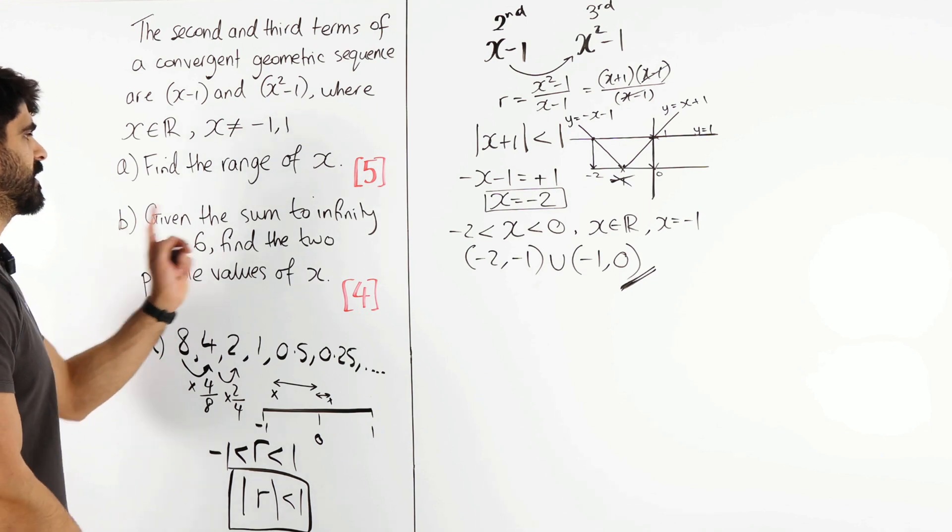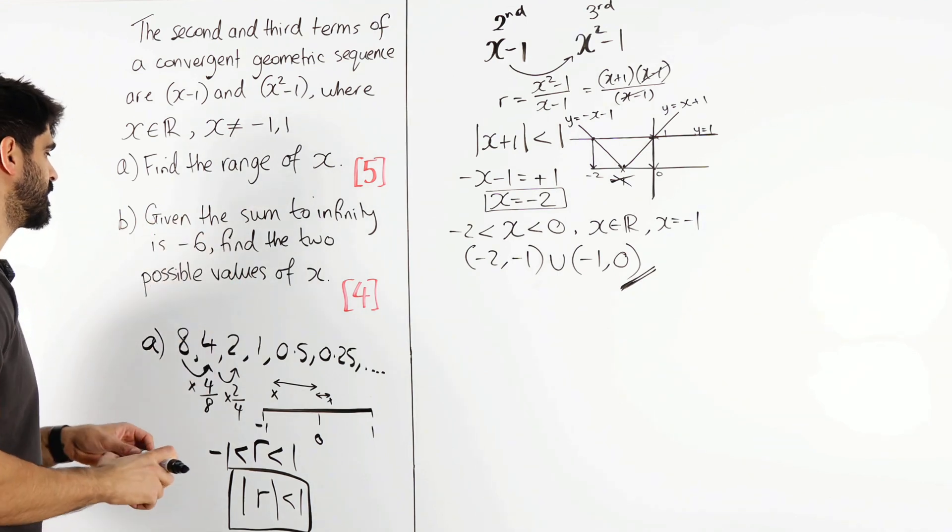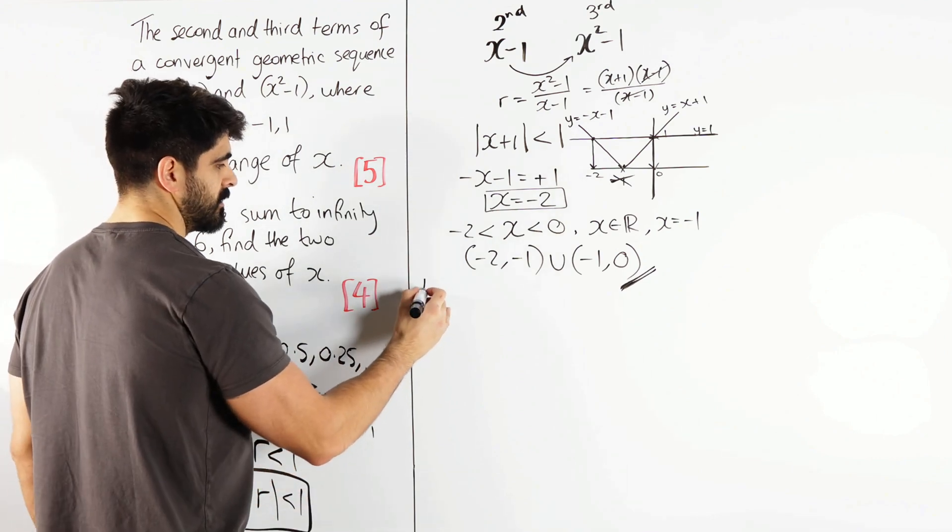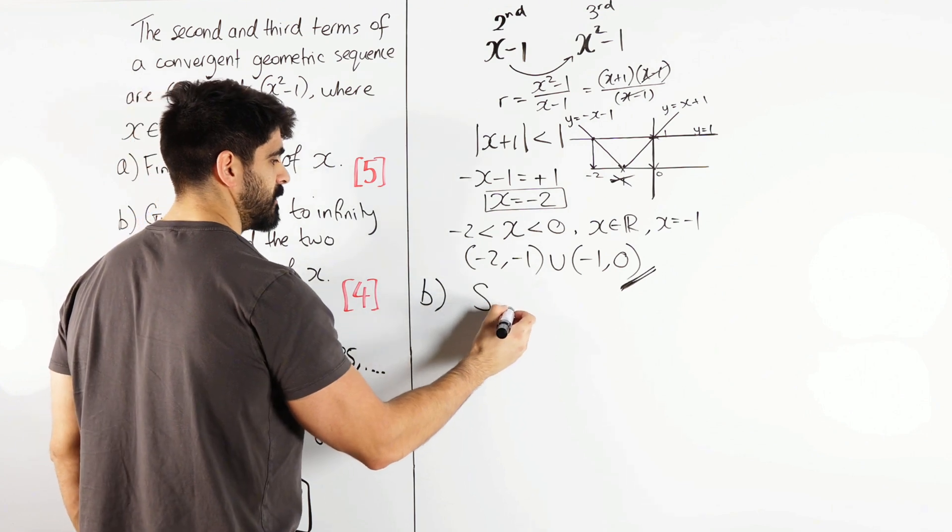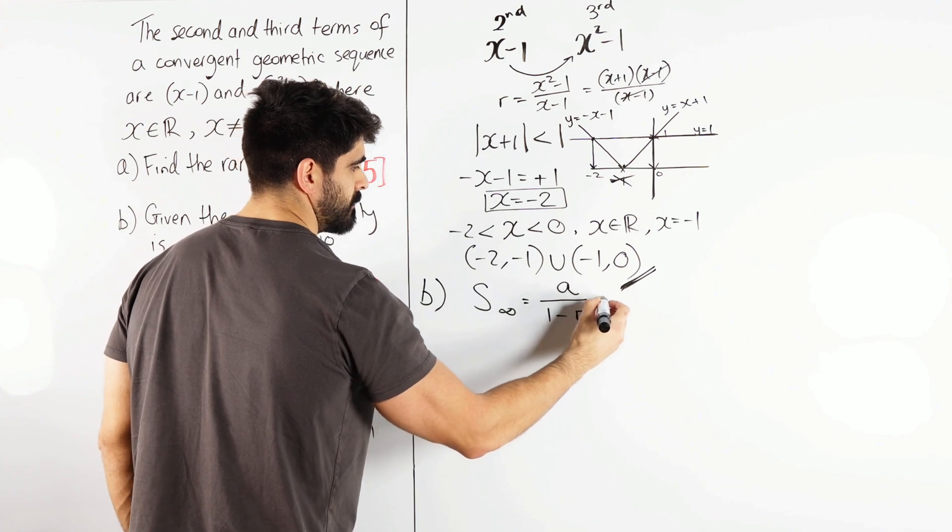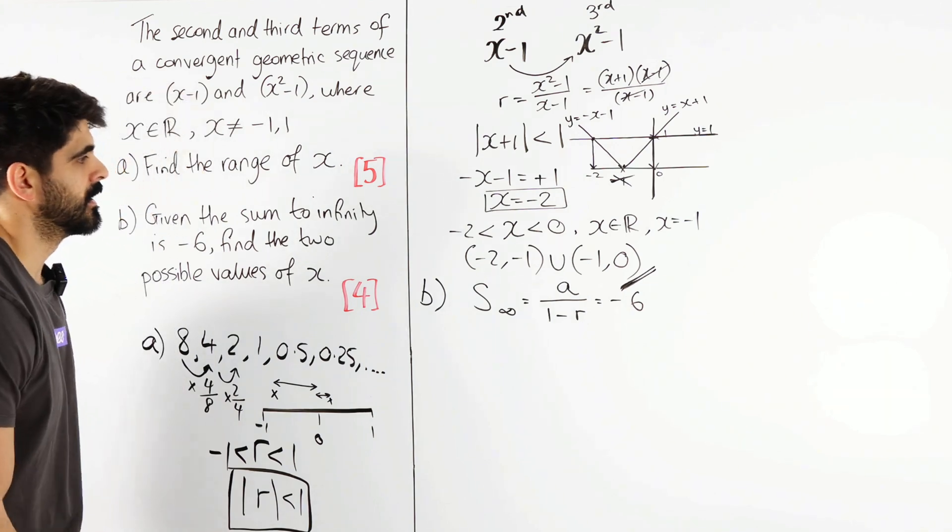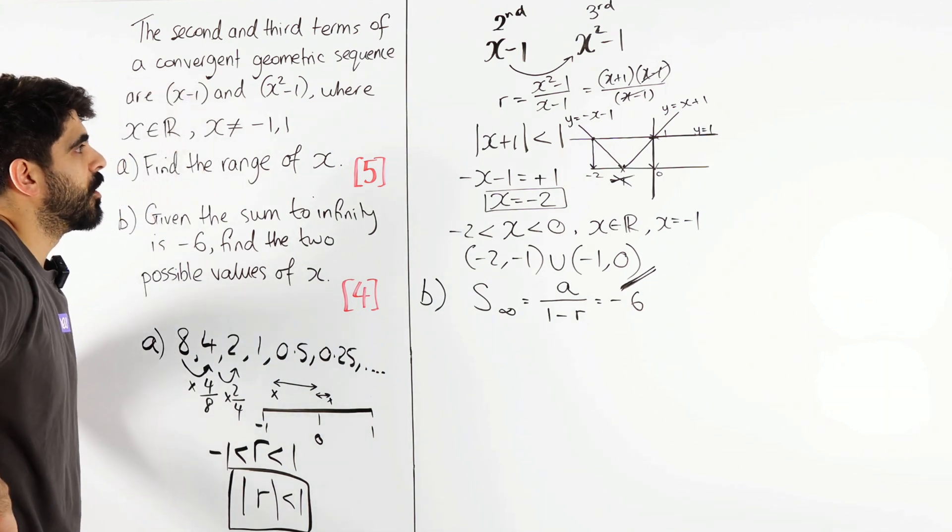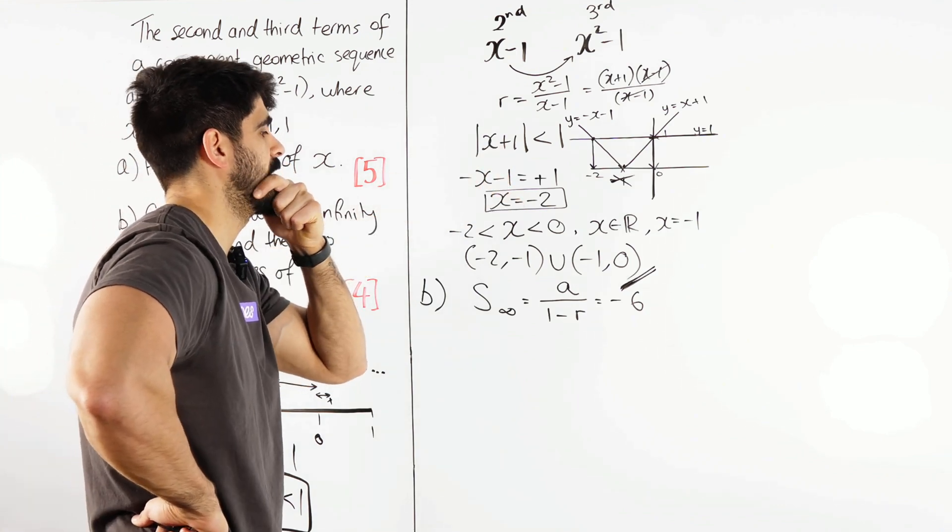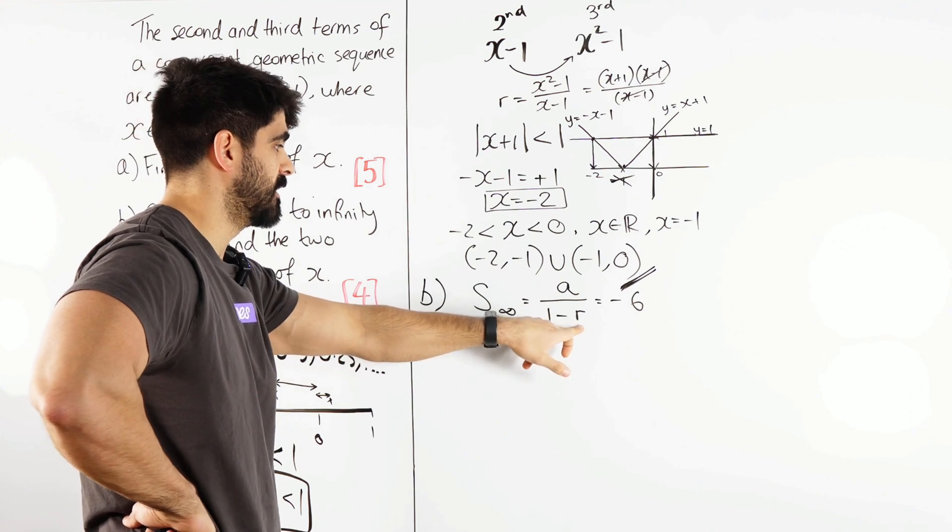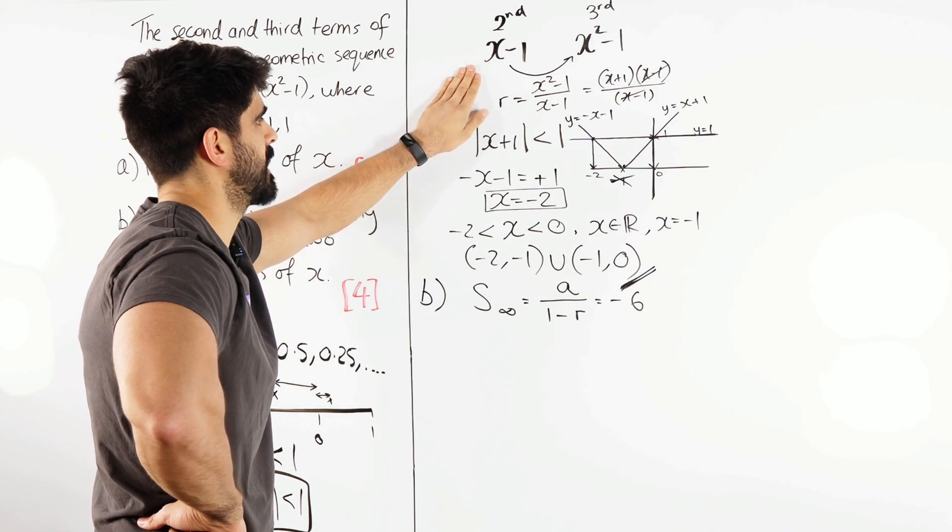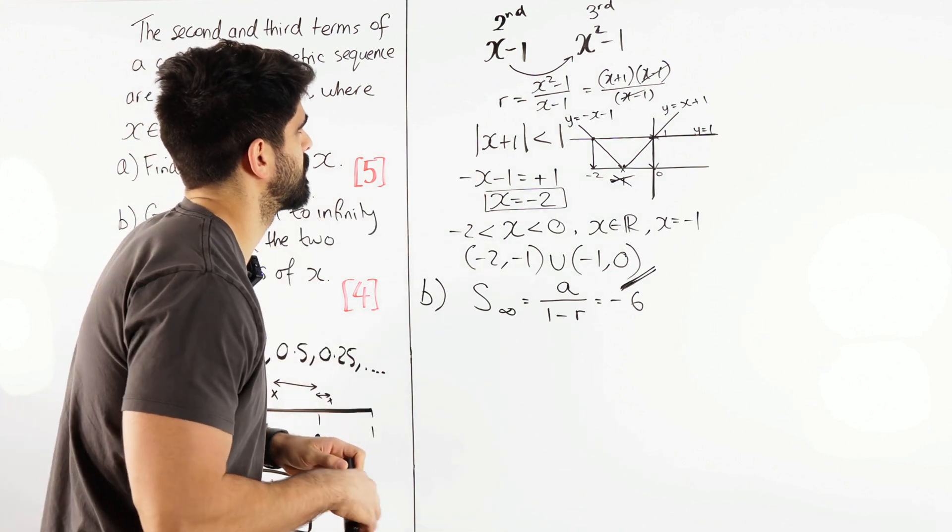Next part says, given that the sum to infinity is minus 6, find the two possible values of x. Now for geometric sequences, the sum to infinity is a over 1 minus r, and they're saying that's minus 6. Now we know what r is. R is x plus 1. So we can sub that into here. But we need to find out what a is. So from here, how could we work out what a is?